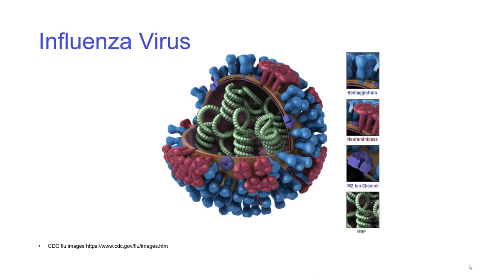There's an outer shell containing hemagglutinin and neuraminidase molecules — the neuraminidases are in red and the hemagglutinins are in blue. Then there's a lipid bilayer, which is taken from the host cell — the animal which it was last infected with. This contains M2 ion channel proteins within that lipid bilayer, and internally you've got the RNA and the RNA proteins, the nuclear proteins.